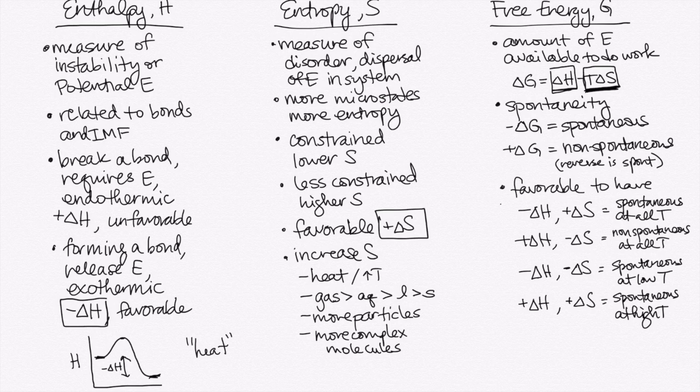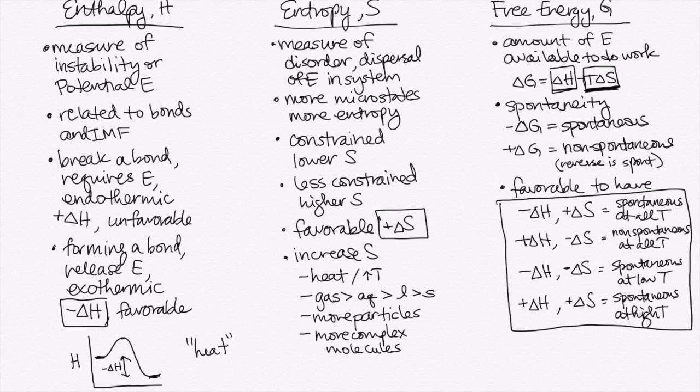So if you're given a reaction or a chemical process or even a physical process like a phase change, you should be able to predict by looking at the process whether the delta H should be positive or negative based on whether you're forming or breaking bonds. And you should be able to look at whether the delta S would be positive or negative based on how many particles you have and the states of matter and how complex the particles are in the reactants and in the products. And finally, if you can determine the signs of delta H and delta S, you should also be able to determine the sign of delta G, which tells you whether that reaction is spontaneous or not.